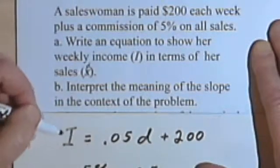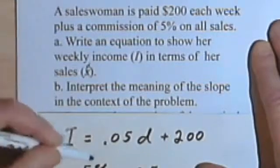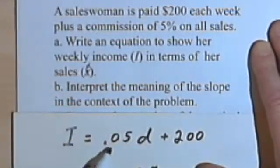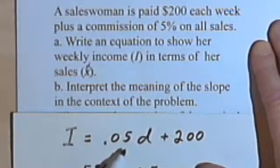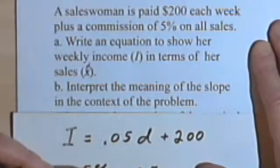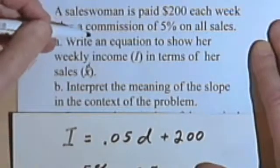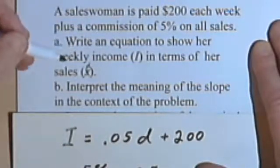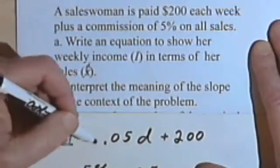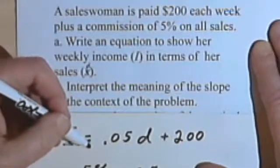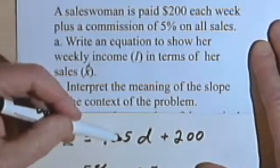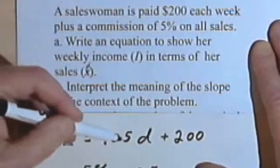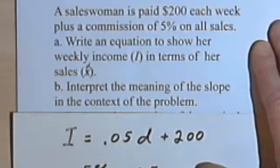So the meaning of the slope in the context of the problem... Well, the slope is .05. We know that because this is a linear equation, and the .05 is the slope. But the meaning of that slope is that she's earning 5% commission. Or we could say the meaning of the slope is that she is earning 5% of the value of the merchandise that she sells, 5% of her sales.